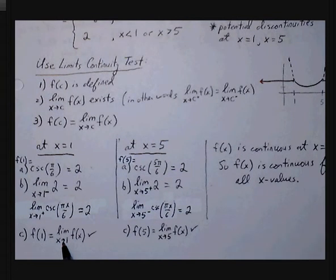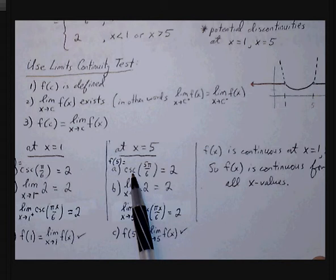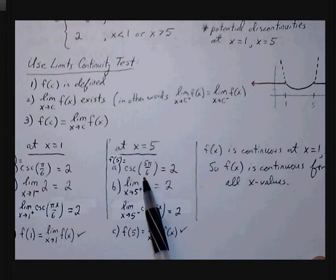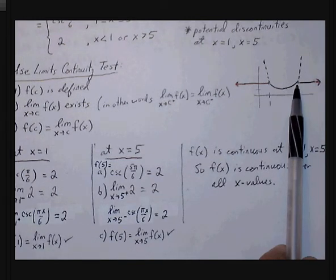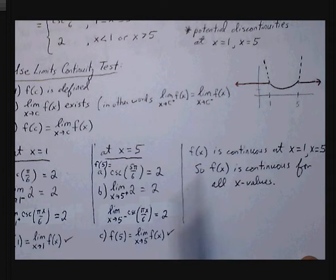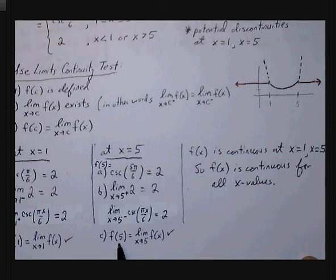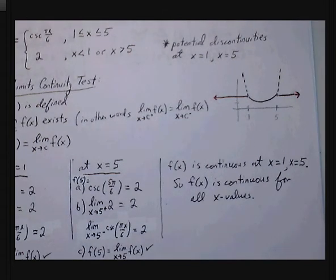Now we move on to x equals 5. We plug 5 in and get cosecant of 5 pi over 6, which also equals 2. The limit as x approaches 5 from the right uses the y equals 2 branch, giving 2. The limit as x approaches 5 from the left uses cosecant of 5 pi over 6, which is also 2. Our ordered pair exists where the limit exists, so the function is continuous at x equals 5 as well. We can conclude the function is continuous for all x values.